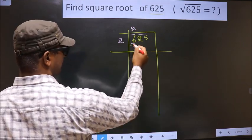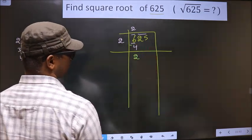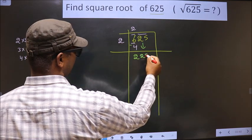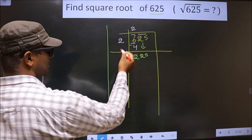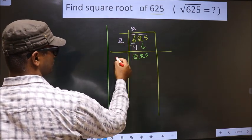Now you subtract. 6 minus 4 is 2. You take down this pair. It will become 225. Now here you should add these two numbers. That is 2 plus 2, 4.